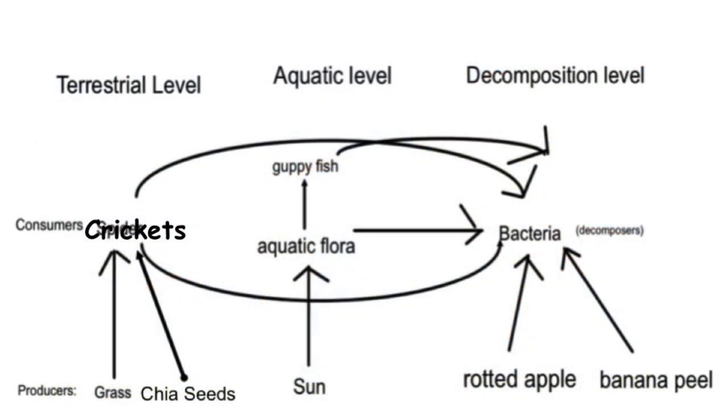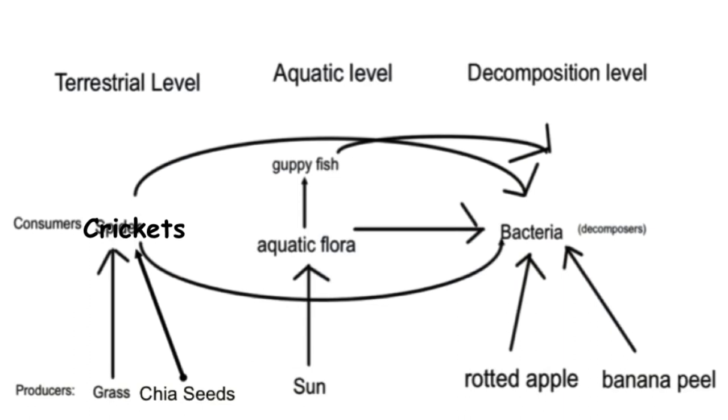When they all die, they get decomposed back into the soil where everything starts from. Remember those three levels? The terrestrial level is usually with plants, usually with chia seeds and grass.